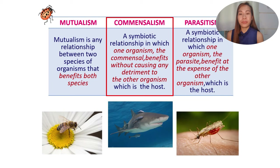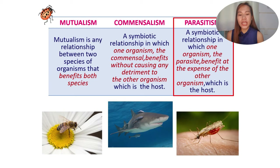Another type of symbiosis is commensalism. In this relationship, one organism — the commensal — benefits but does not cause any harm or detriment to the other organism, the host. Parasitism, on the other hand, is where one organism — the parasite — benefits at the expense of the other organism, the host. A mosquito is a classic example of parasitism. These are the three types of symbiosis.